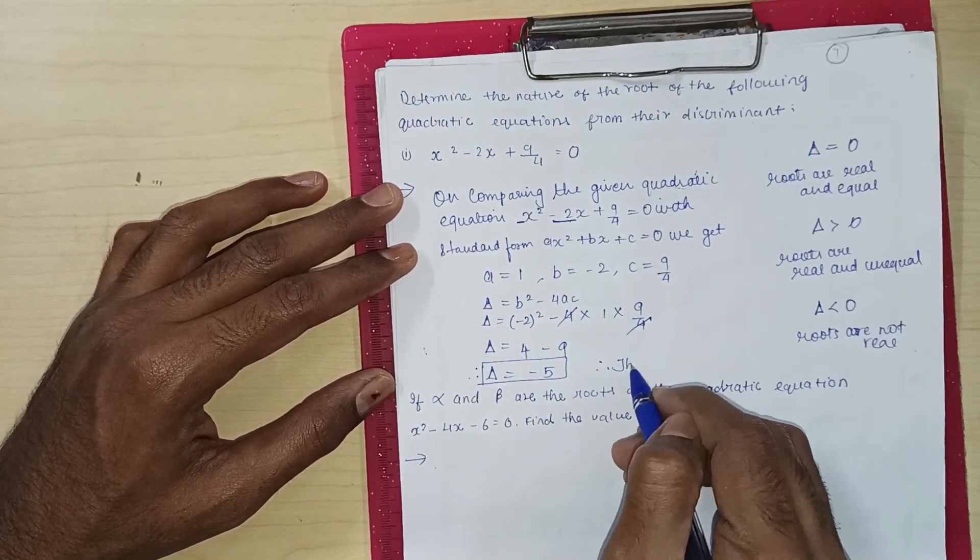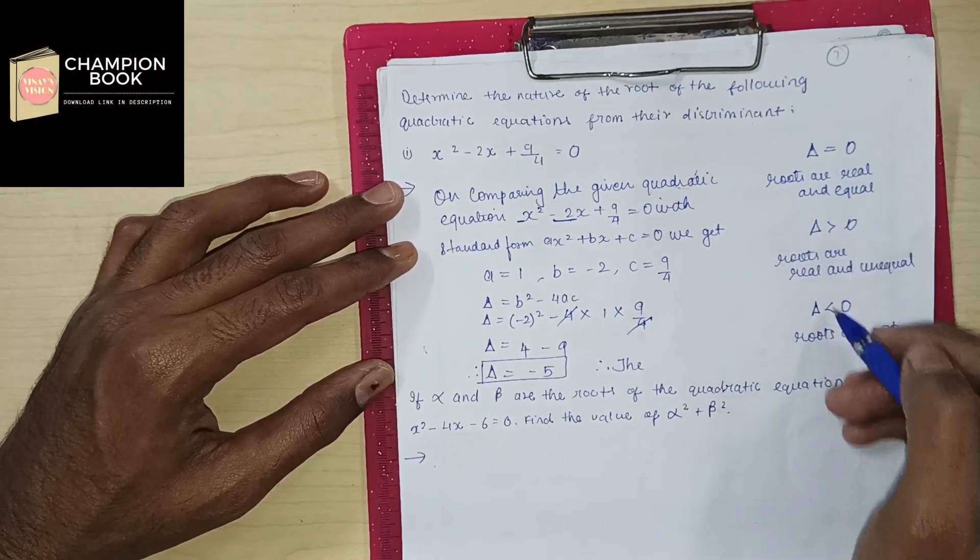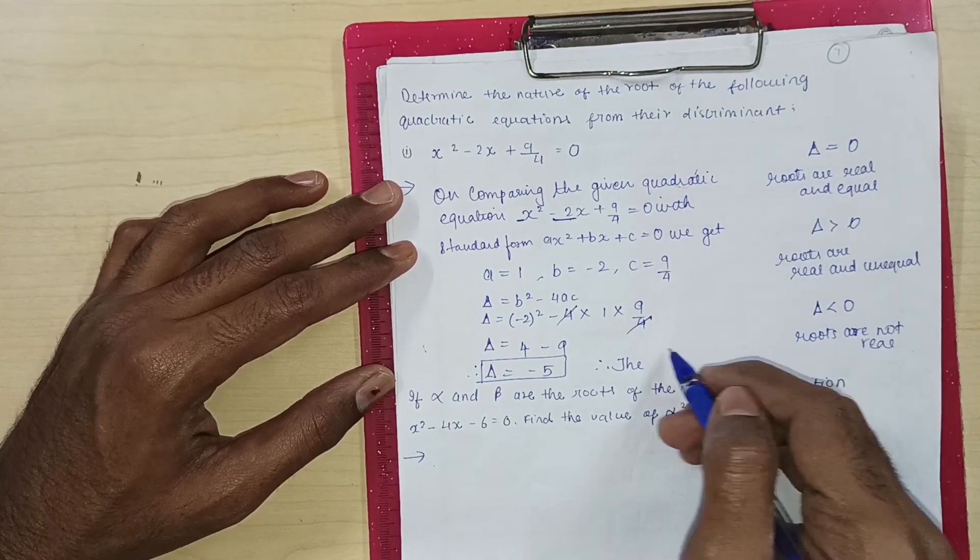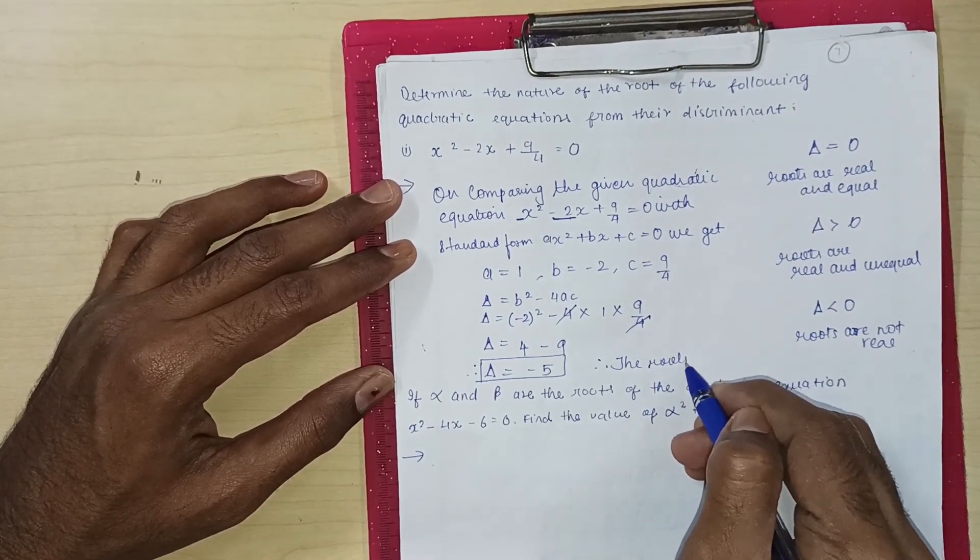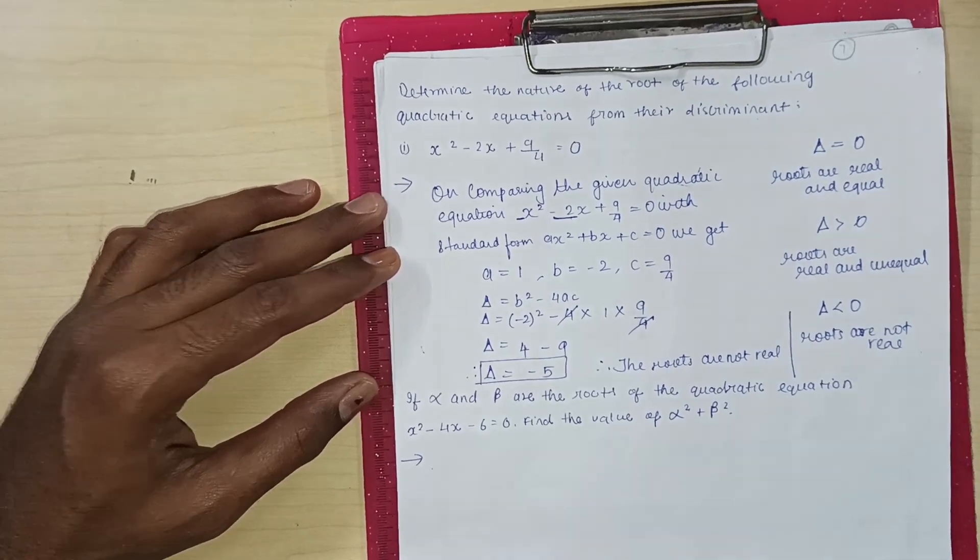Therefore, the roots are, you know, did you get delta 0 or not? No. Did you get positive or negative? The roots are not real. The roots are not real. The roots are not real. That is clear.